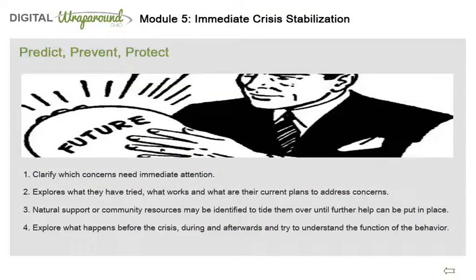The facilitator helps to clarify which concerns need immediate attention. The facilitator explores what they have tried, what works, and what are their current plans to address concerns. If the crisis is an immediate physical need, natural support or community resources may be identified to tide them over until further help can be put in place. If it is the child's or someone else's behavior, explore what happens before the crisis, during and afterwards, and try to understand the function of the behavior — is it to avoid something, gain control, or attention? It will be easier to change the concerning behavior if you address the function or need it is meeting.